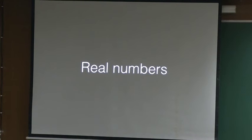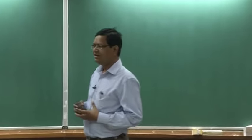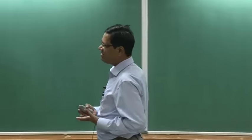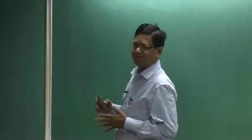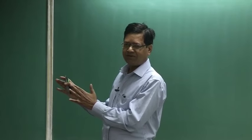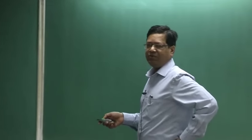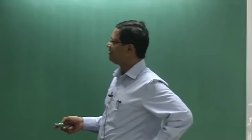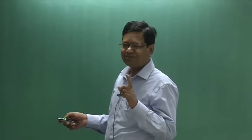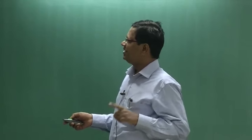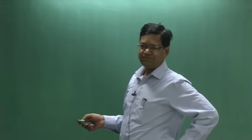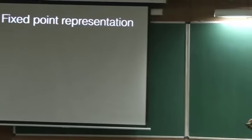Let us look at real numbers, which we will deal with most of the time. There are two ways to represent real numbers. I will just tell you the idea. This very interesting line of thought went into how to represent real numbers in computing. The two ways we are aware of - we use the first one very often - this is called fixed point representation. The decimal point is fixed.